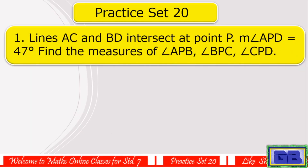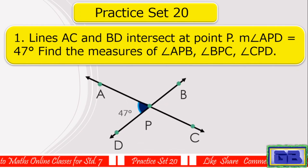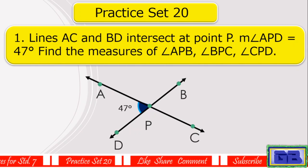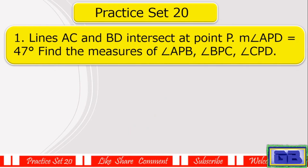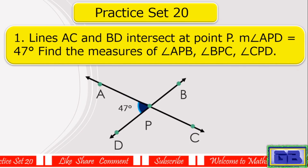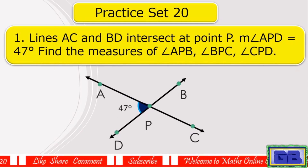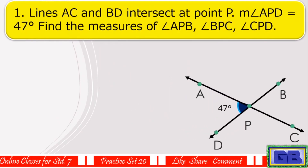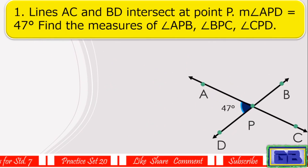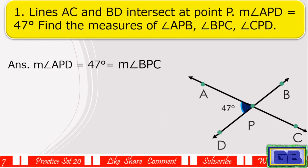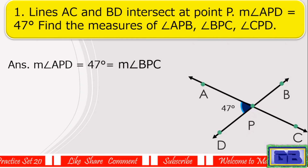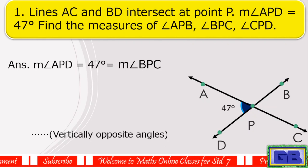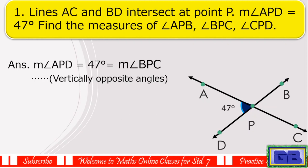Question number one: Line AC and BD intersect at point P. Measure of angle APD equals 47 degrees. Find the measures of angle APB, angle BPC, and angle CPD. Answer: Measure of angle APD equals 47 degrees equals measure of angle BPC, because these are vertically opposite angles.